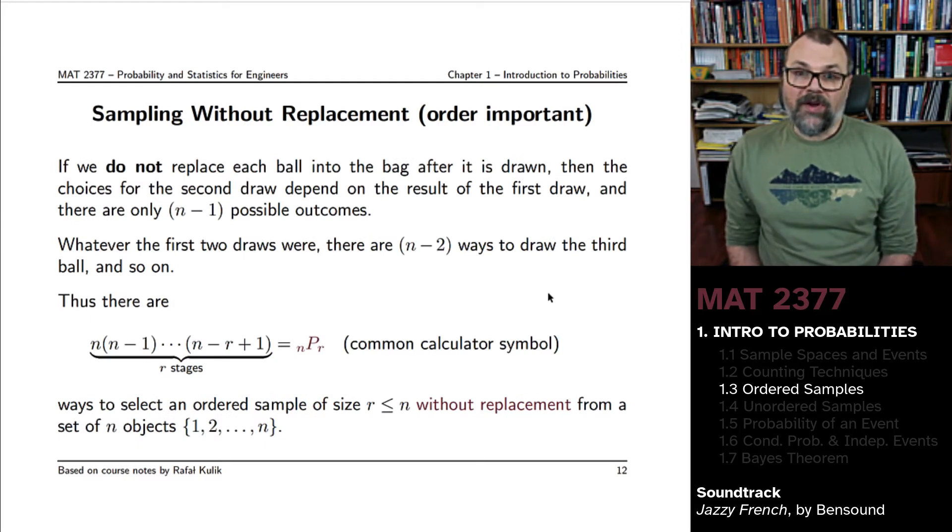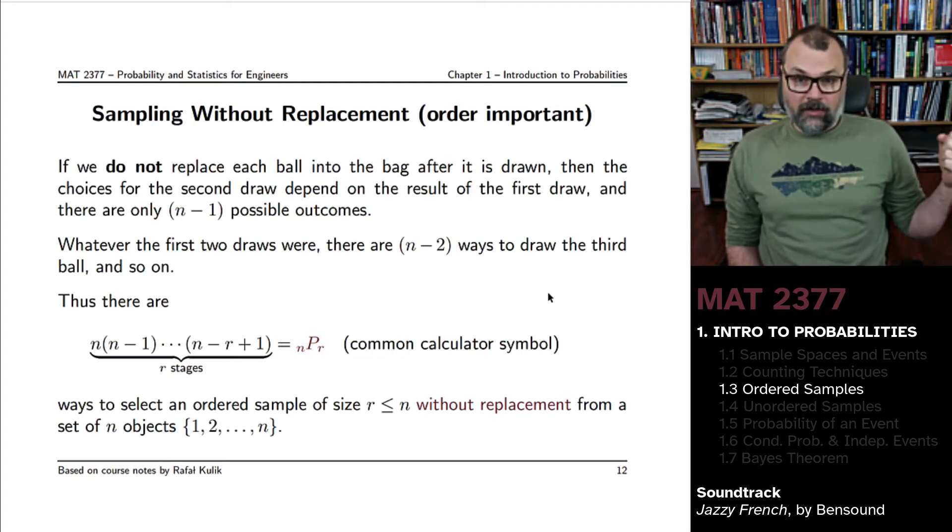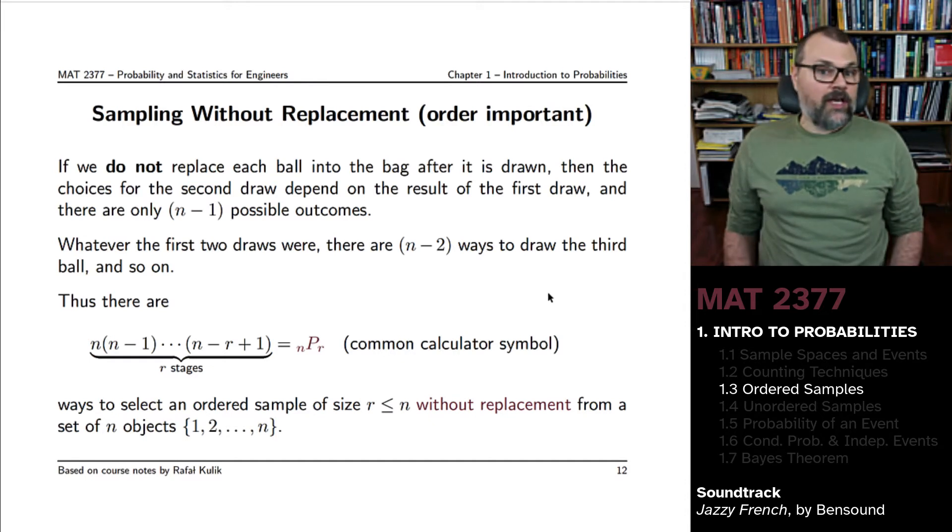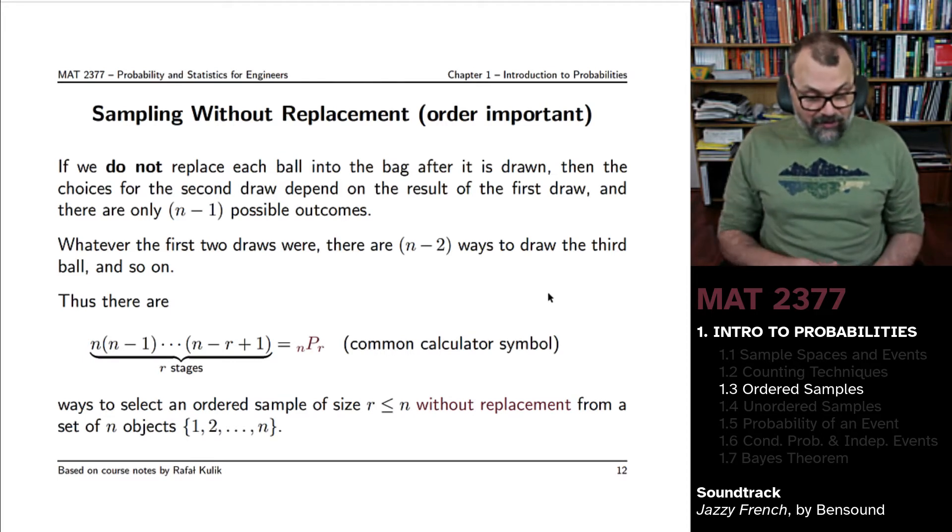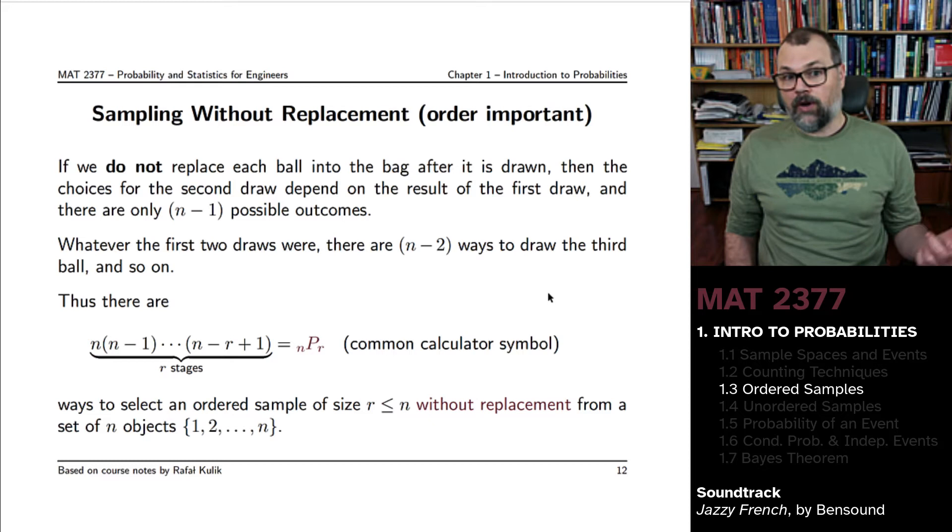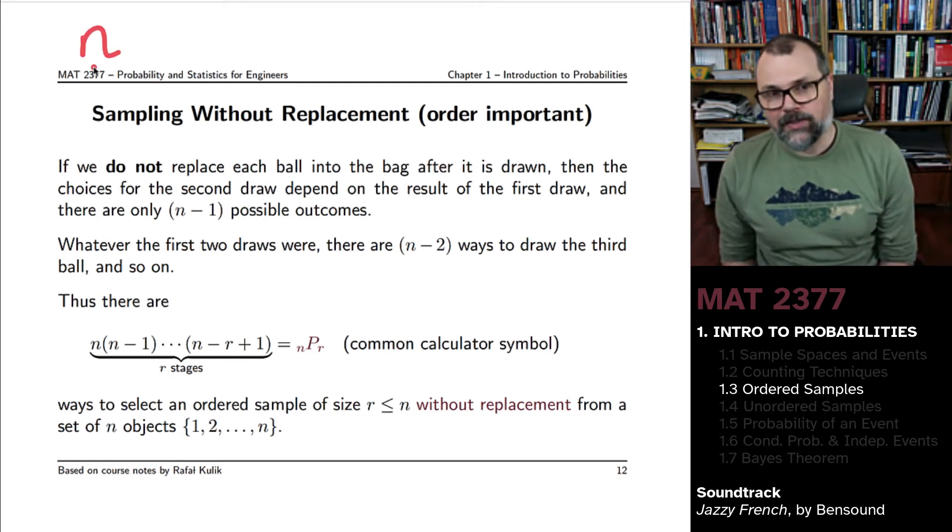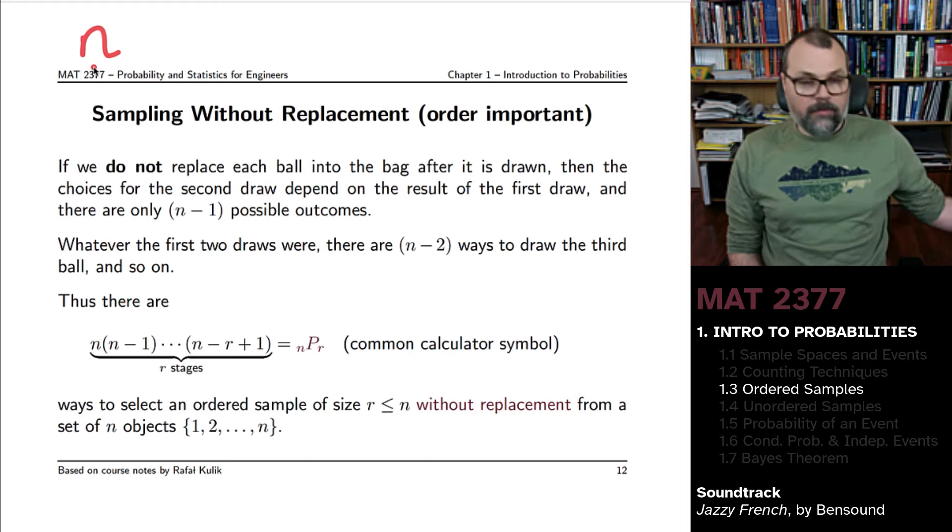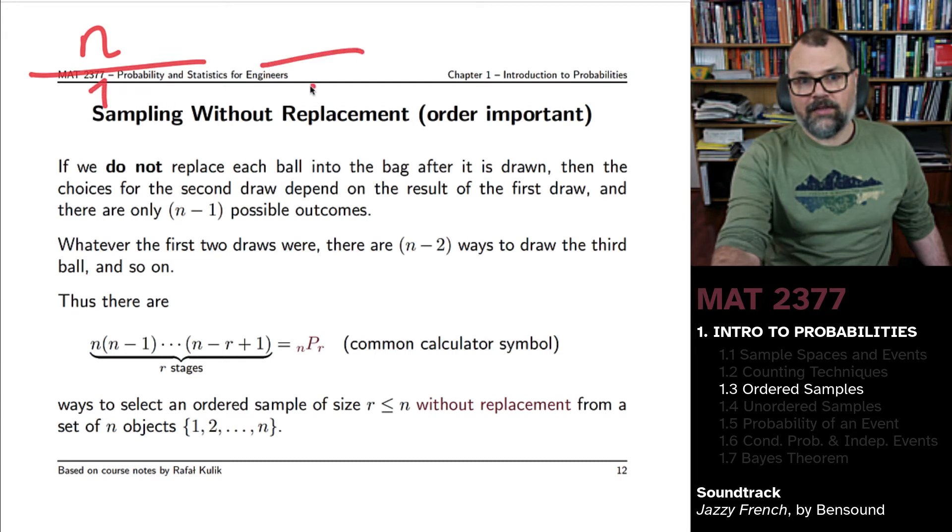If you sample now without replacement, if you do not replace each of the balls that has been drawn at a stage into the bag after it's drawn, then your stages are different. For the second stage, the second draw, the choices, the types of outcomes you can get will depend on the result of the first draw. And you don't have the same number of possible outcomes. There might be N choices for the first outcome, or N possibilities. Then once one ball has been picked in the first stage and put aside, in the second stage, you do not have N choices anymore, you have N minus 1 choices.